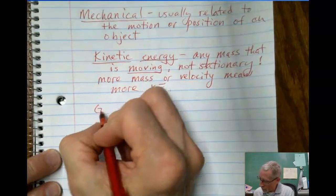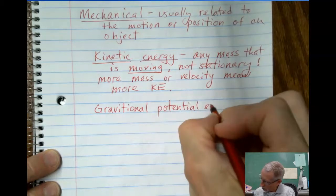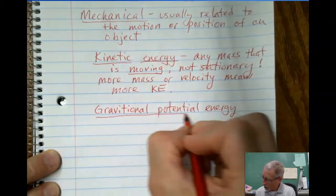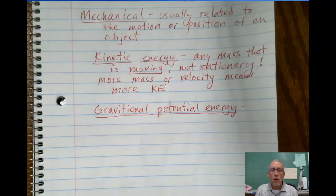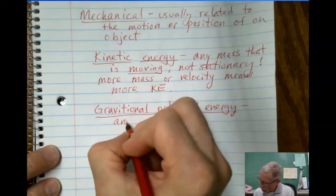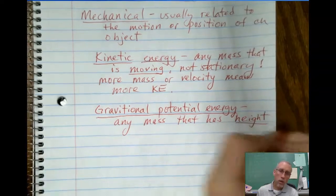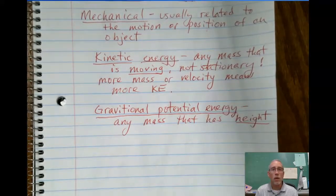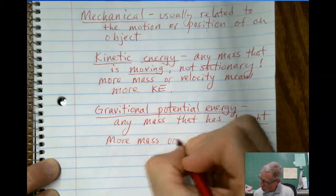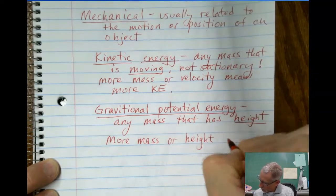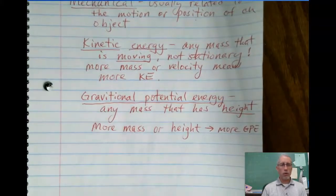Now, there's two other forms of mechanical energy I want to describe. Long name for this one. Gravitational potential energy. Most students have heard of potential energy before, and kinetic for that matter. But you might not know that potential energy actually comes in two little sub forms or sub flavors, I sometimes say. The one most people think of is gravitational potential energy. So this is any mass that has height, all about its location or its position. Remember, I said that about mechanical energy. So more mass or height means more gravitational potential energy. Hope you're okay with me just writing GPE. It's a little shorter. Probably easier for you, too.